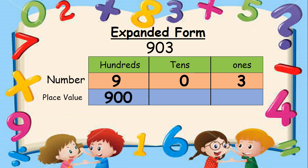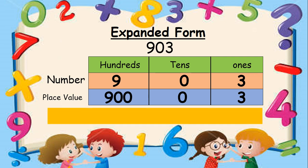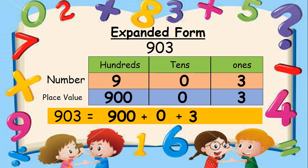The place value of 0 is 0 because there is no ten. The place value of 3 is 3. Step 3: write 903 as the sum of the place value of its digits. 903 is equal to 900 plus 0 plus 3. This is the expanded form of the number 903. I hope you have understood how to write the expanded form.